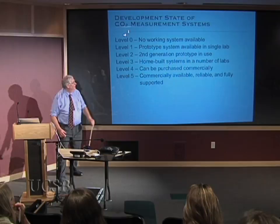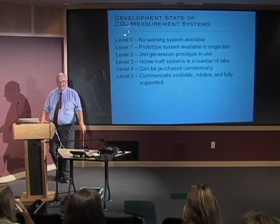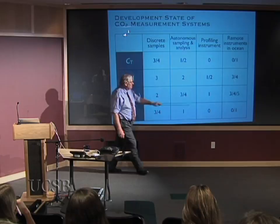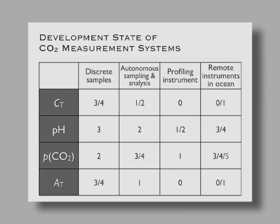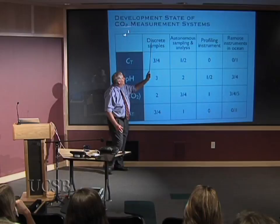What development state are we at? If we imagine going from zero to five — zero meaning it doesn't work, five meaning you can buy it and they'll tell you how to use it — with the possible exception of one of the PCO2 systems, you're not at level five anywhere. You can buy systems, and there are numerous ones in varying labs, but you can't just buy it on the whole and use it.